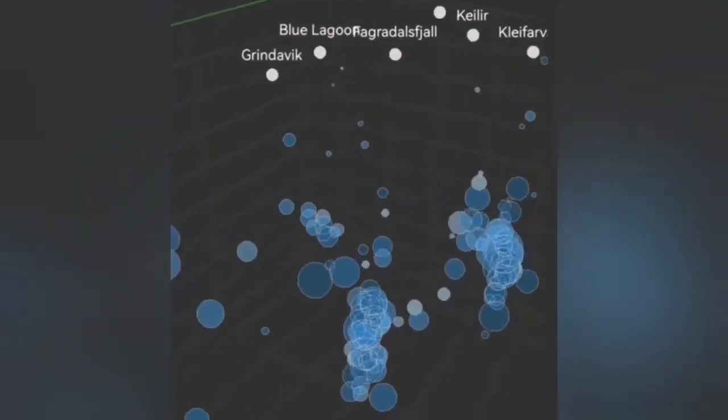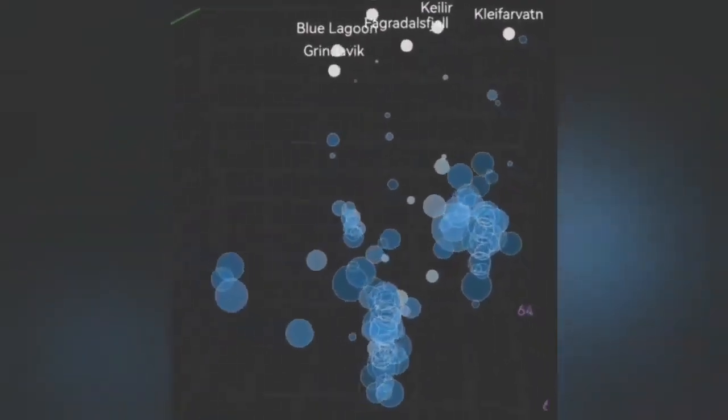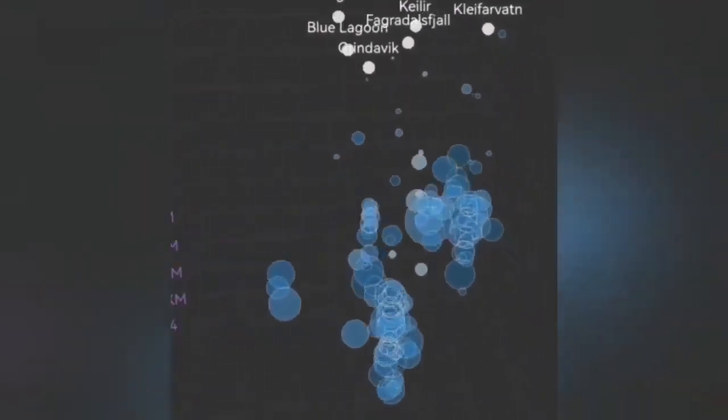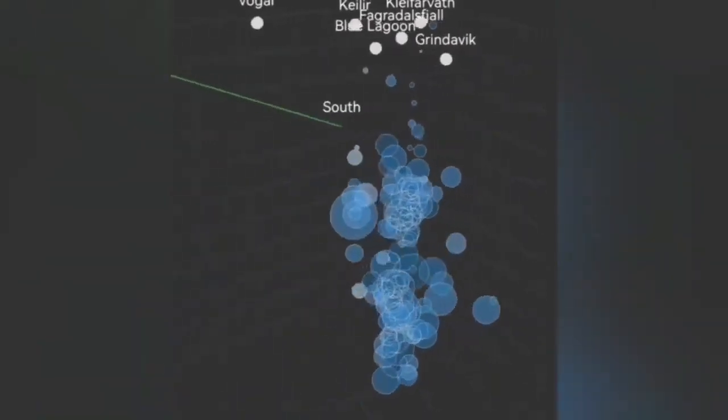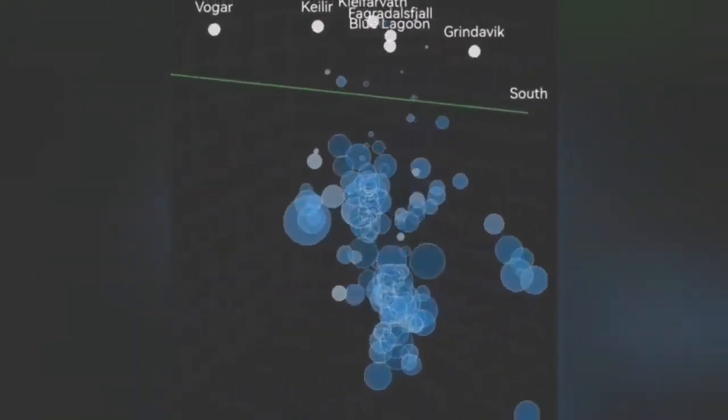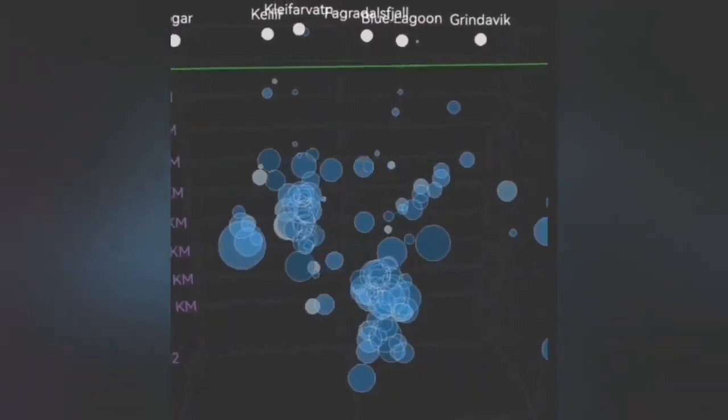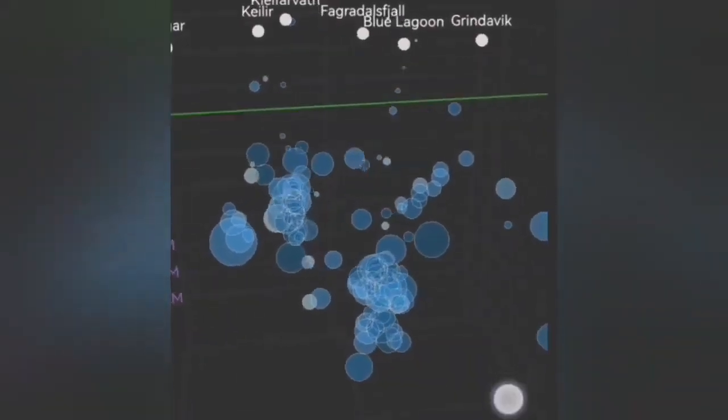This is today's again. You can see the same beam of circles is what we can call a dike moving upward and then through a transgressive sill moving toward Grindavik again.